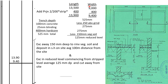We shall analyze the length and the width. The length is 6,000 plus 3,500 plus 4,000, which is 13,500. And the width is 9,000. So if the width is 9,000 we add 400, it shall be 9,400. So the dimensions are 13.9 and 9.4.